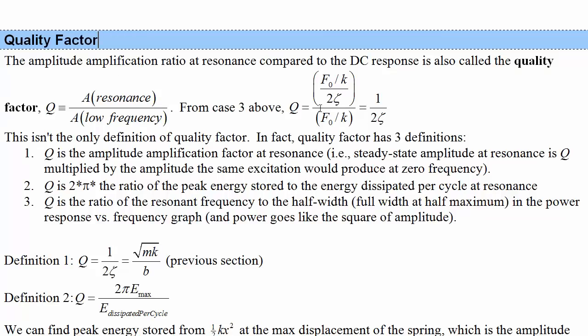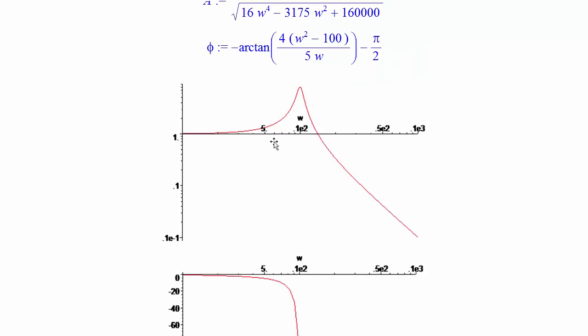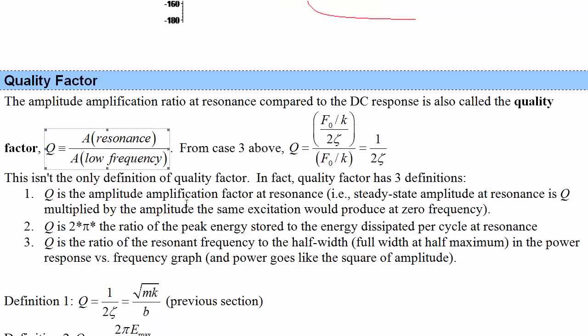The final thing we're going to talk about here is the quality factor. This is another term that's used, like the damping ratio, when people talk about resonances. The amplitude amplification from DC is the quality factor. Up here, we found that when we were at resonance, we had an amplitude that was 8 times higher than the DC amplitude, so we'd have a quality factor of 8. The quality factor characterizes how sharp the resonant peak is. Higher quality factor would mean a higher peak, and a lower quality factor would be a shallower peak, less pointy. There's some other definitions. In addition to this, which turns out to be 1/(2ζ), you can define the quality factor as 2π times the peak energy stored to the energy dissipated per cycle at resonance.